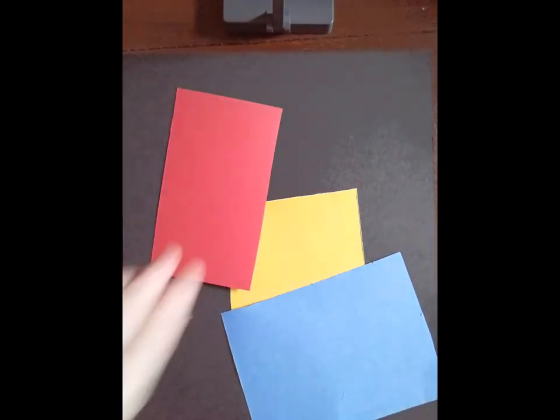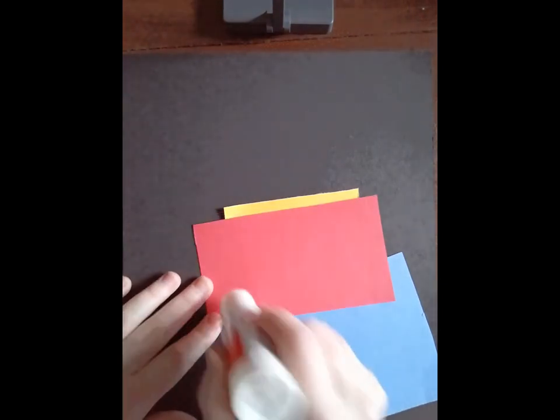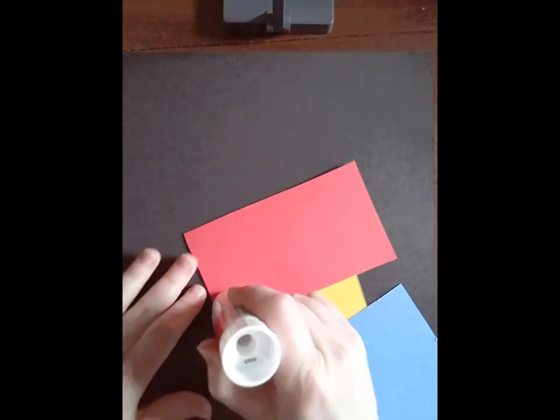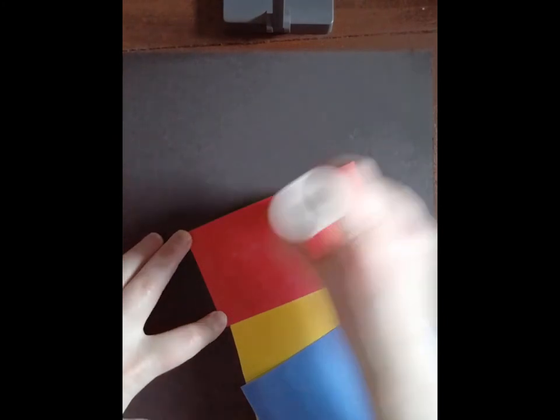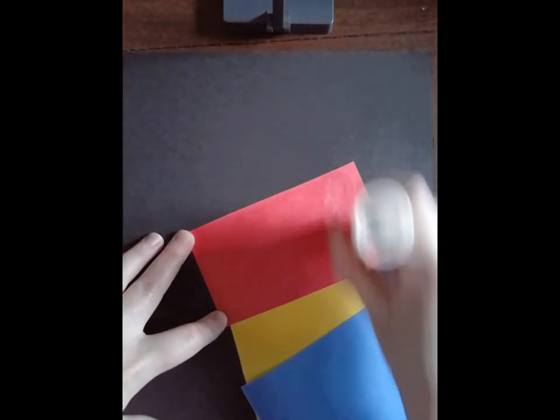Whenever you glue, always make sure that you put the glue on the back of the small paper instead of smearing it all over the large paper. And definitely make sure you have something underneath the paper so that you don't get glue on the table.